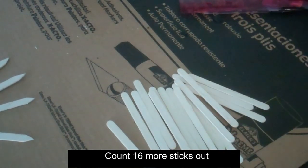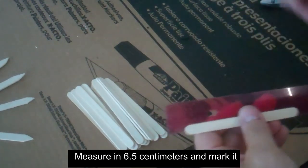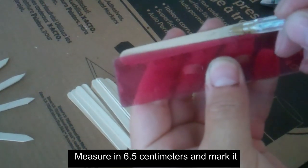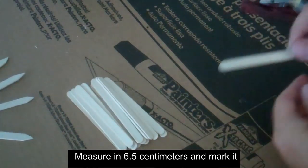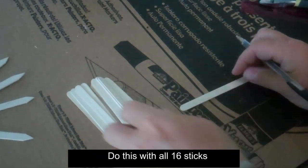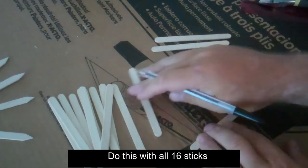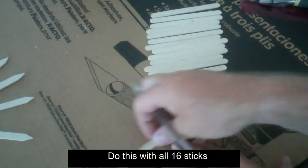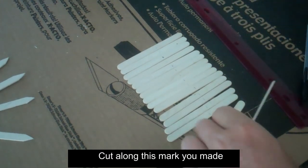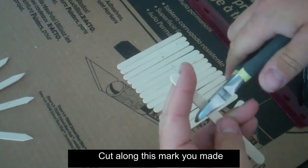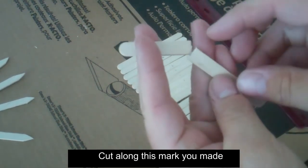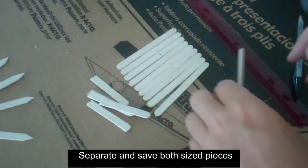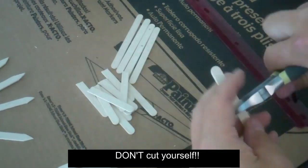Now count out 16 more sticks. Make this mark on the remaining 15 popsicle sticks. Take your preferred cutting utensil and cut the stick right on the line that you had made. You can see there are two sizes. Separate these two sizes as you go. You will need to use both sizes in this mirror.